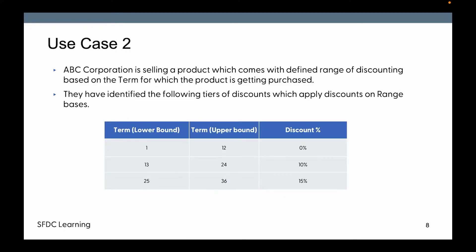We are moving forward to use case two: ABC Corporation is selling a product which comes with a defined range of discounting based on the term for which a product is purchased. For a lifespan of 1 to 12 months, we provide 10% discount; for 13 to 24 months, 10% discount; and if the product is purchased for 25 to 36 months, we provide 15% discount.